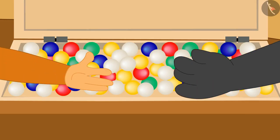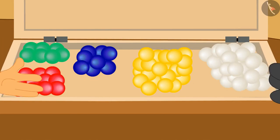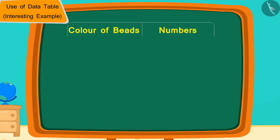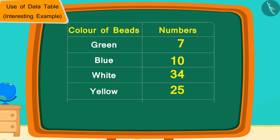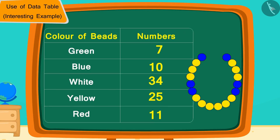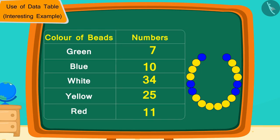She and Golu together counted the number of beads and wrote them in a data table like this. Children, can you see this table and tell if Chanda and Golu have enough beads to make their necklace? If you want you can stop the video and find the answer.